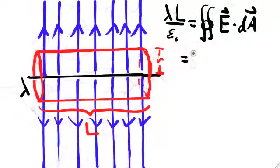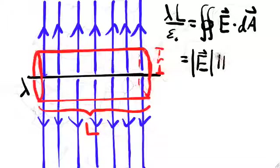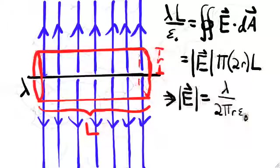No flux passes through the ends of the cylinder. And by symmetry, we know that the flux through the side of the cylinder is equal to the magnitude of the electric field times the area of the side. Unrolling the cylinder tells us that the area of the side is equal to 2 pi R times L. We find that the electric field magnitude goes like 1 over R.